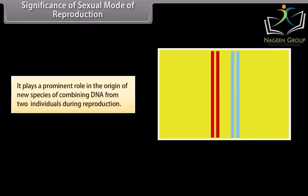It plays a prominent role in the origin of new species by combining DNA from two individuals during reproduction.